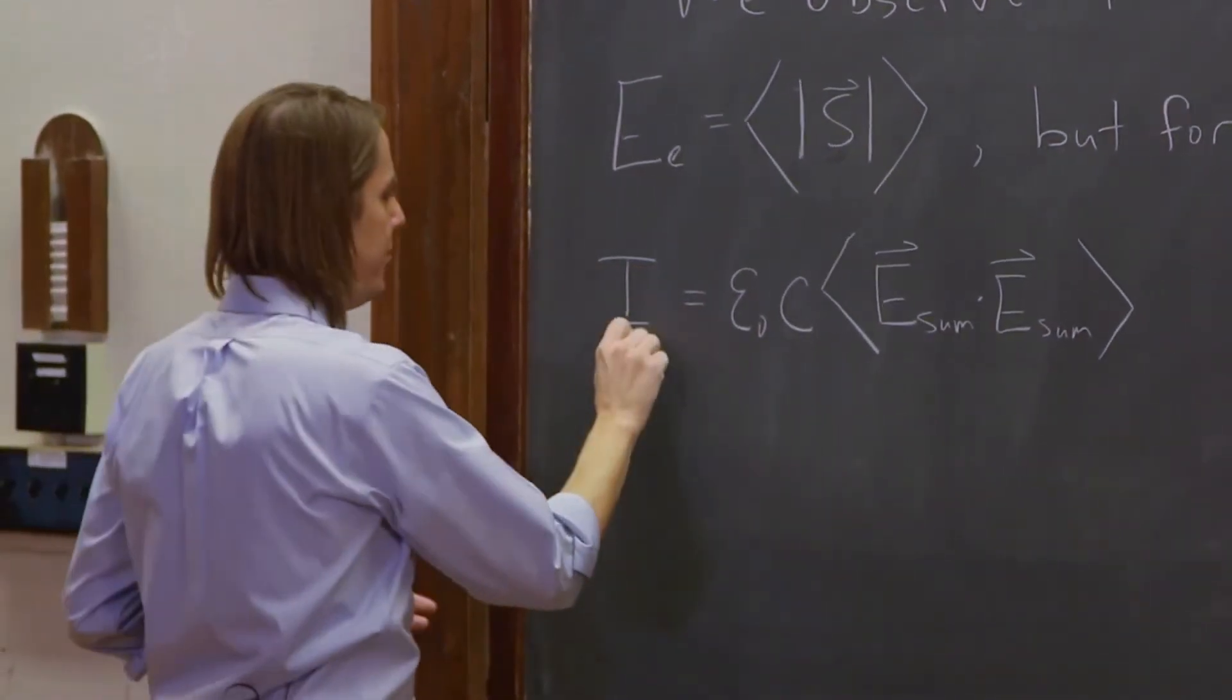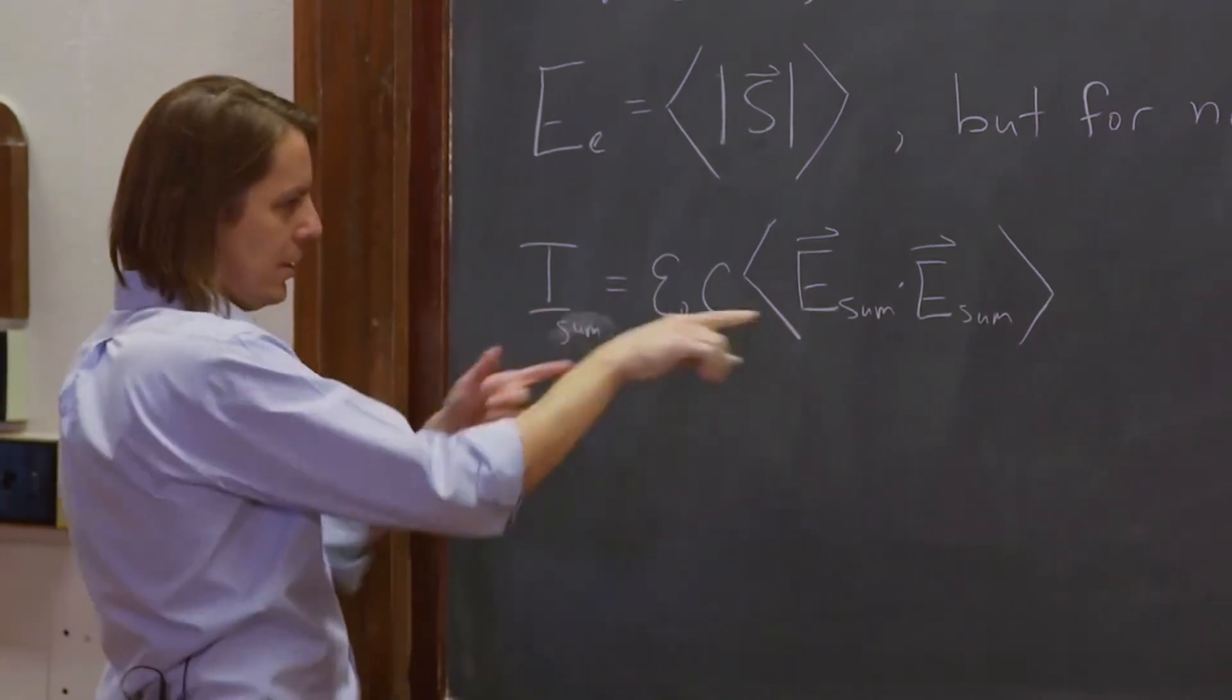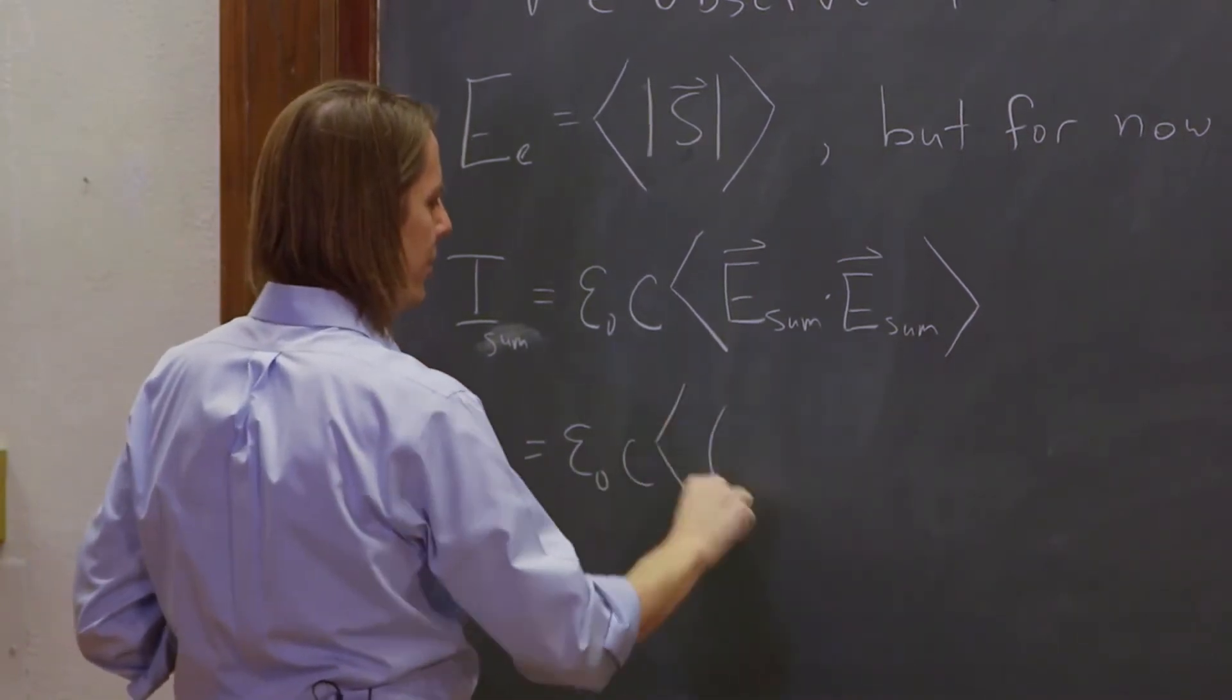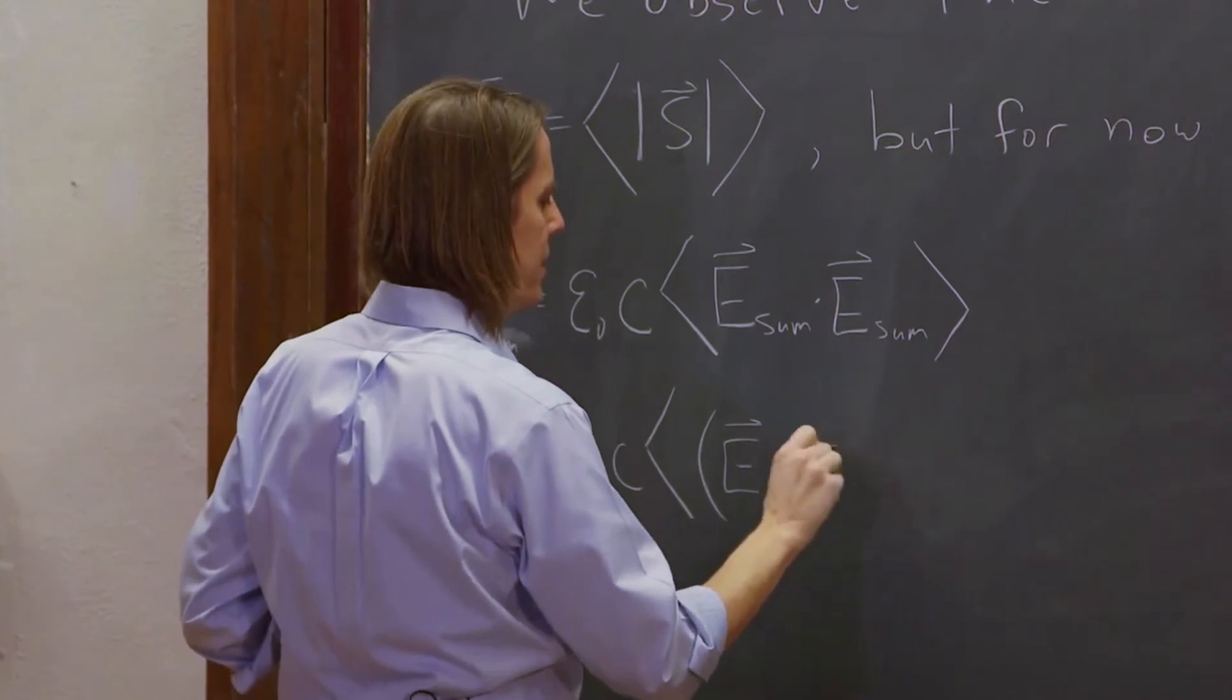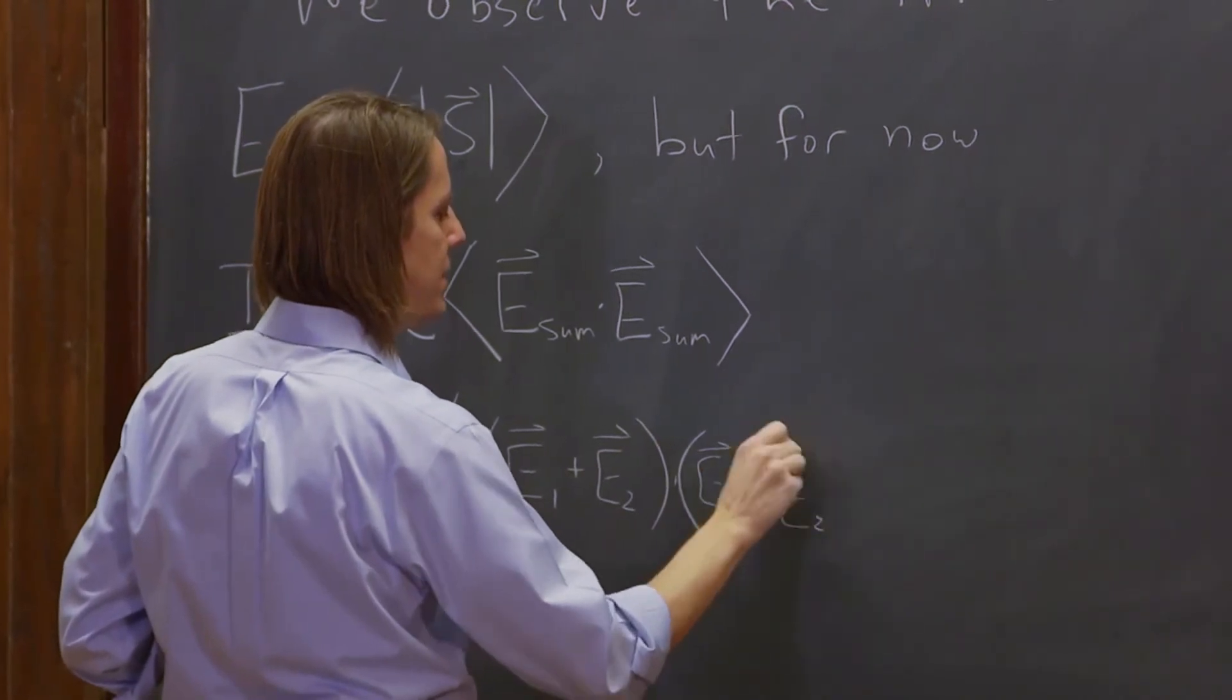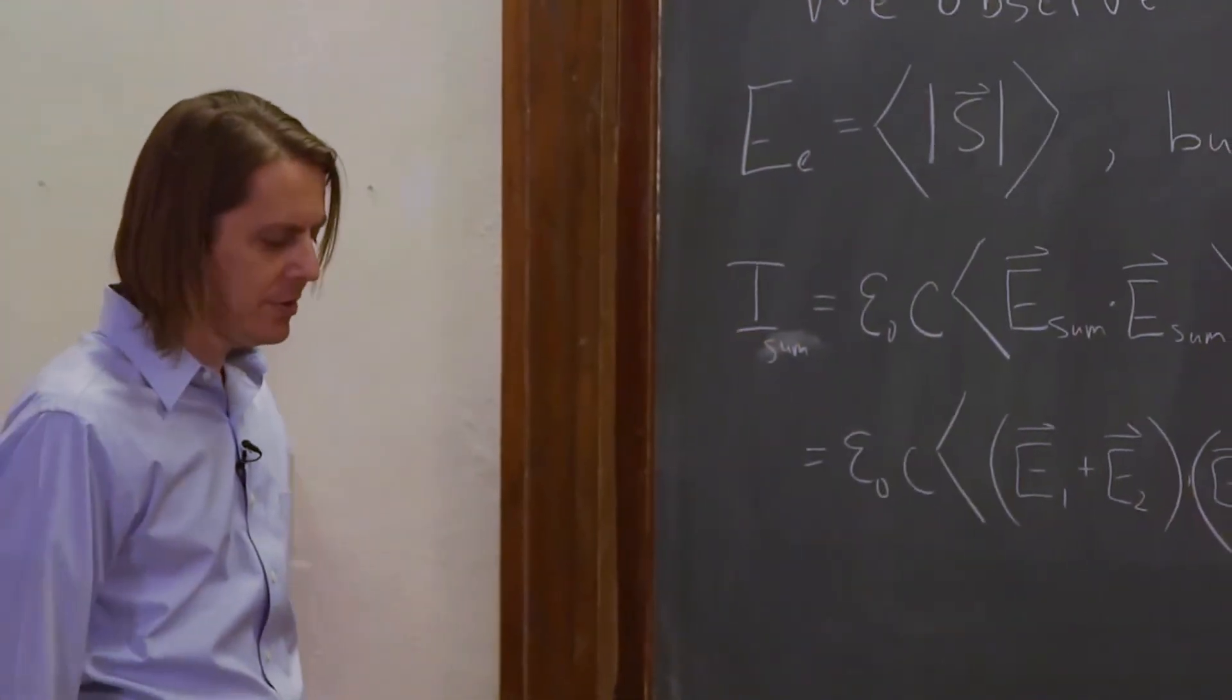So this is the total irradiance if we take the summed field. So we can then say that's epsilon_0 C times the time average. Well, what was E_sum? E1 plus E2 times E1 plus E2. That's what E_sum is. It's E1 plus E2.